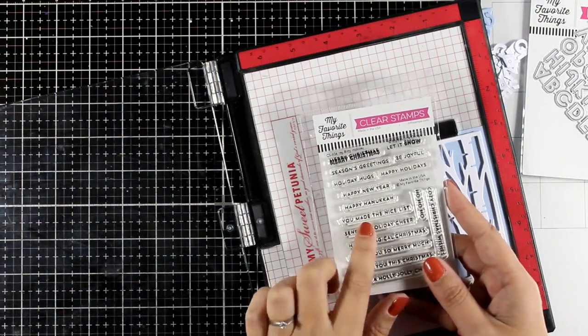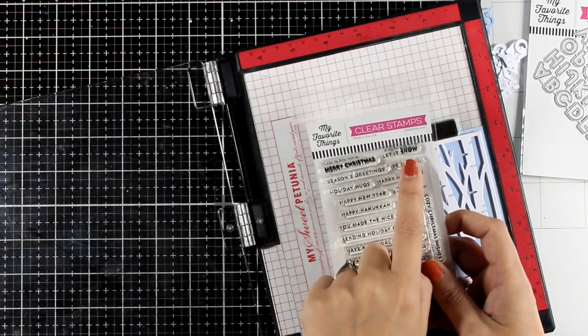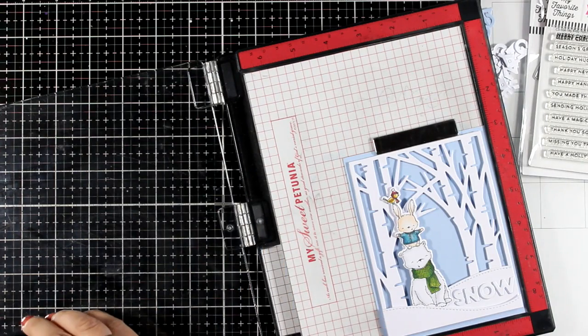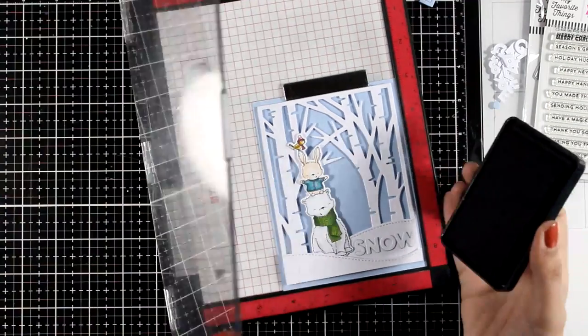Now in the Itty Bitty Holiday stamp set, there is one sentiment that says 'let it snow.' I'm going to use only the part that says 'let it' and I'm going to stamp it over my letters.